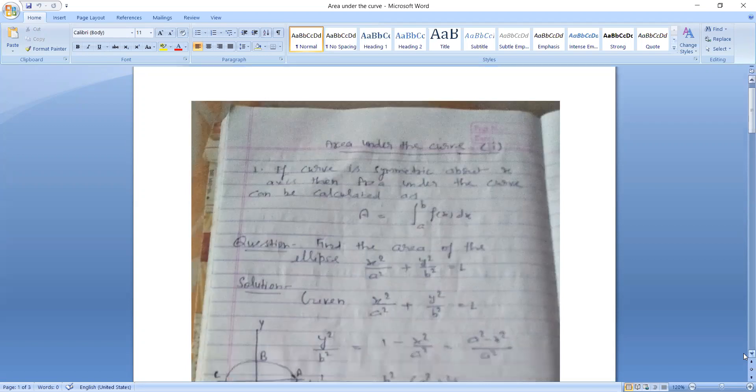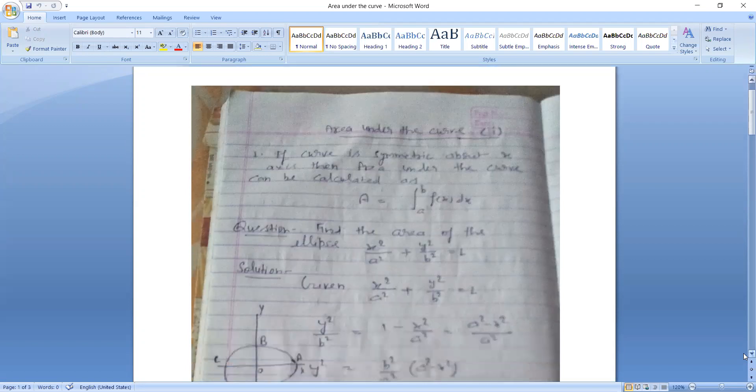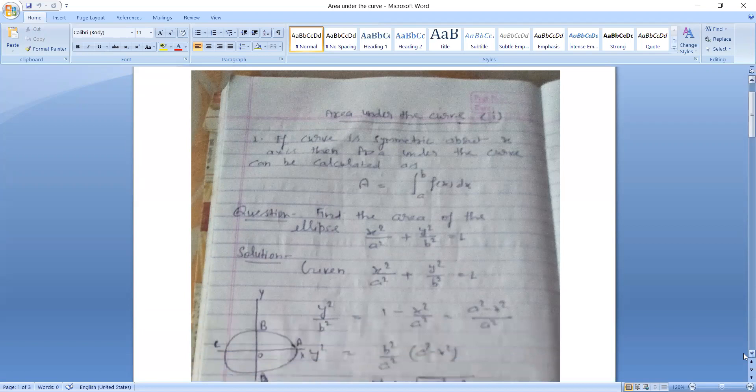If the curve is symmetric about X axis, then the area under the curve can be calculated by the formula A is equal to integral A to B. Now see the question. Find the area of the ellipse X square upon A square plus Y square upon B square is equal to 1.